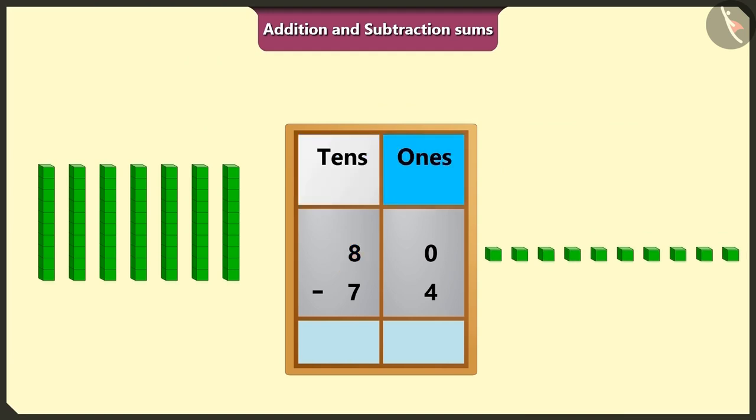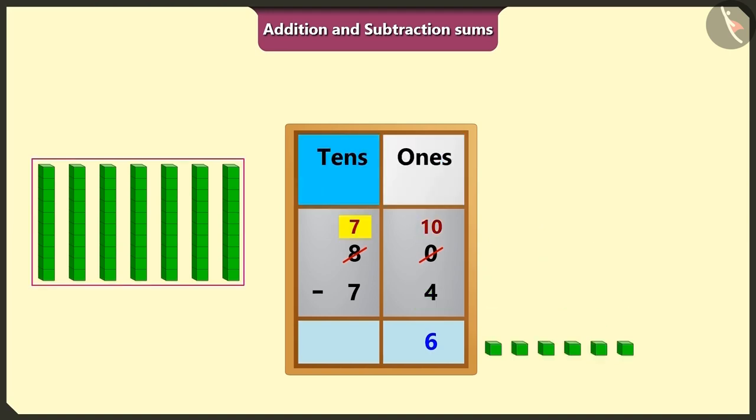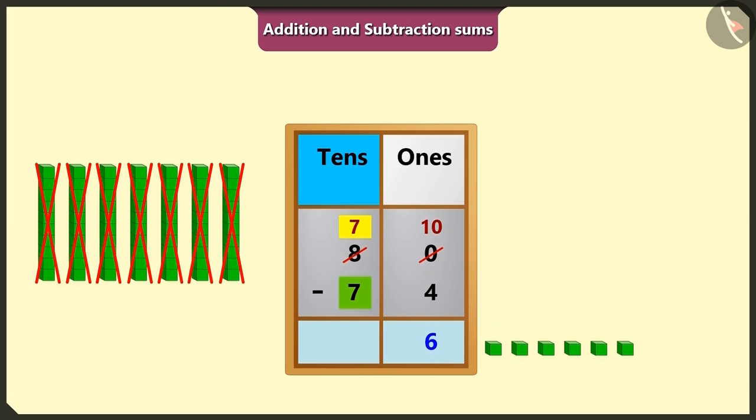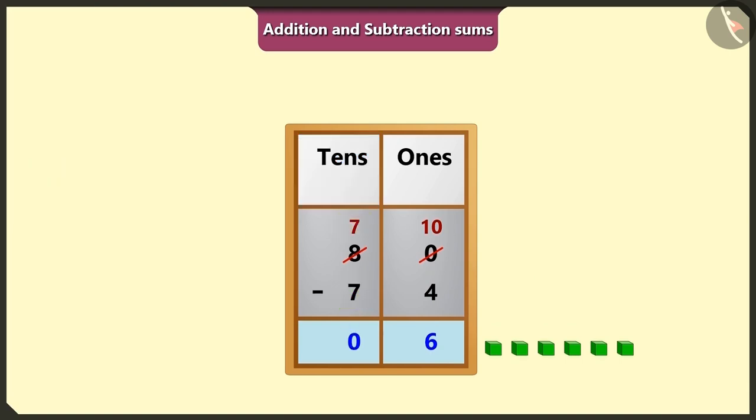Now, it will be 10 ones in place of 0 in the box of ones and 7 tens in the place of 8 tens in the box of tens. Now, if we will subtract 4 ones from 10 ones, it will be 1, 2, 3, 4, 5 and 6 ones left. And if we will subtract 7 tens from 7 tens, it will be 0 left in the box of tens.